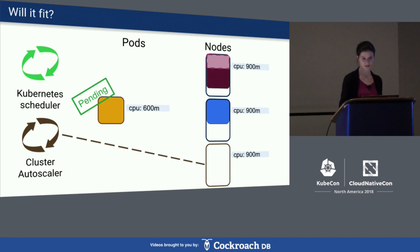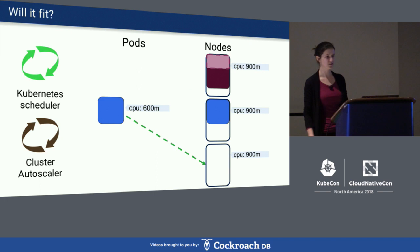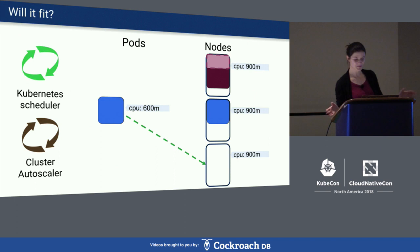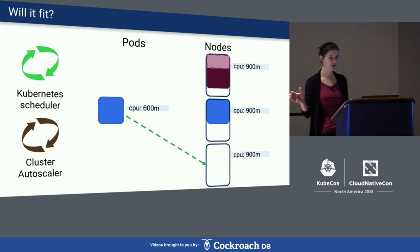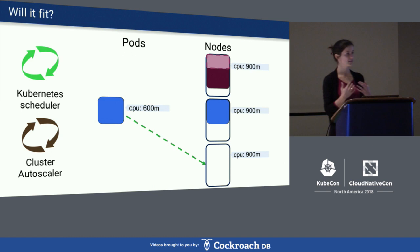Well, maybe all your workloads run and have enough resources — actually more than enough. But if the resource requests were set correctly in the first place, we wouldn't need that third node. So we're actually using more resources than we need.